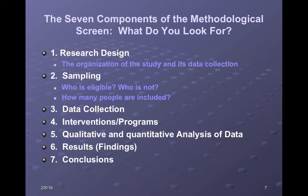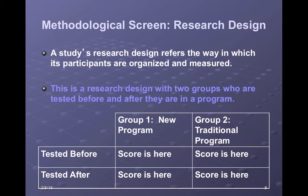Some of the other things that Fink mentions here: interventions are the nature of the program, the results are what they found, and then the conclusions. As we mentioned a couple of weeks ago, as part of our practical screen, we're going to look through the abstract and conclusions first as a way of determining whether or not to spend more time with a particular article. Some of these seven components — in particular one, two, three, and five — are things you'd want to use as a methodological screen: determining whether this is going to be really useful, somewhat useful, or likely not that useful towards your literature review. You can usually judge that based upon the quality of the research being done.